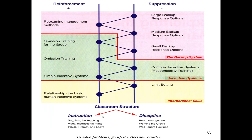Here's Fred's ladder. You start off with relationship building. The limit setting is on the suppression side. On the reinforcement side, a simple incentive system — PAT. On the right, a complex incentive system like responsibility training. On the left, omission training for individuals. Then a small backup response system, medium backup, and finally a large backup system. This represents the escalation between the positive interventions on one side and negative sanctions on the other.